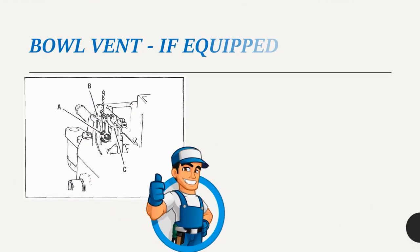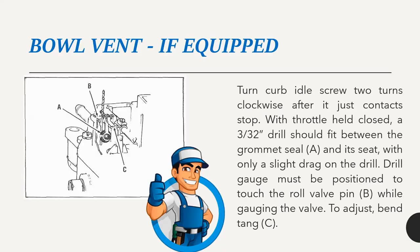Bowl vent (if equipped): Turn curb idle screw 2 turns clockwise after adjusting contact stop. With throttle held closed, a 3/32-inch drill should fit between the grommet seal A and its seat with only a slight drag. Drill gauge must be positioned to touch the roll valve pin B while gauging the valve. To adjust, bend tang C.